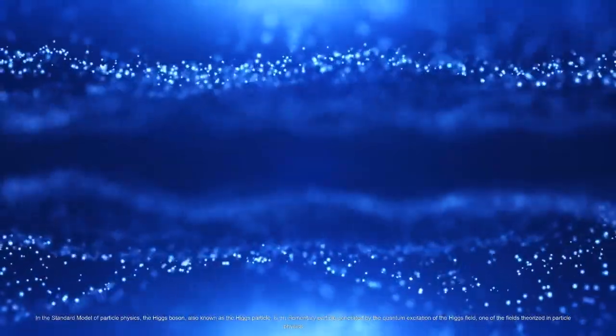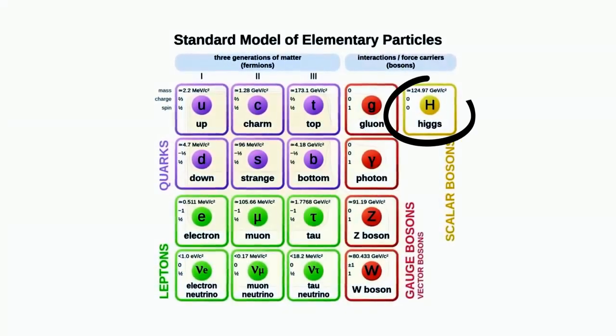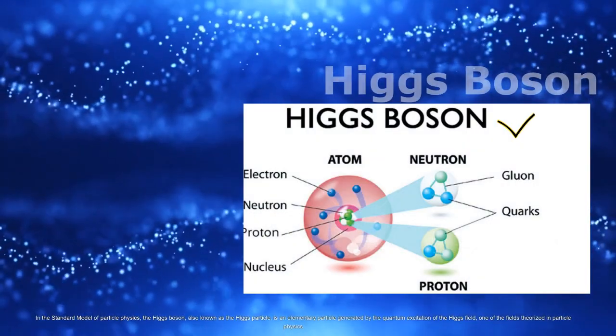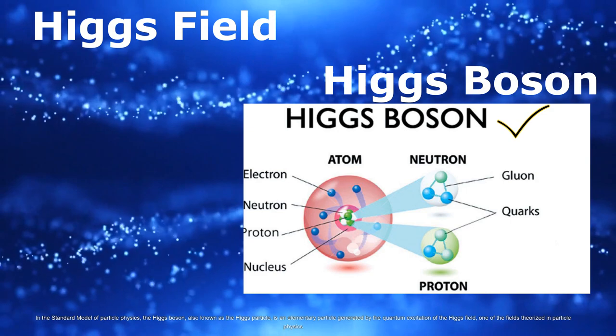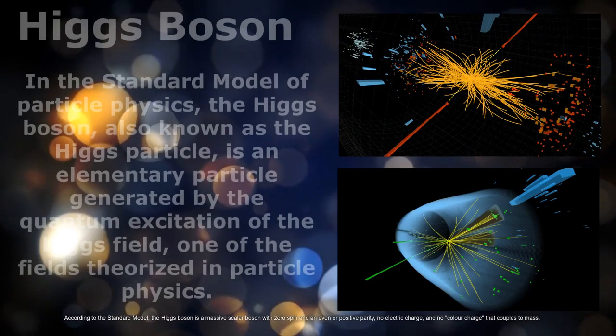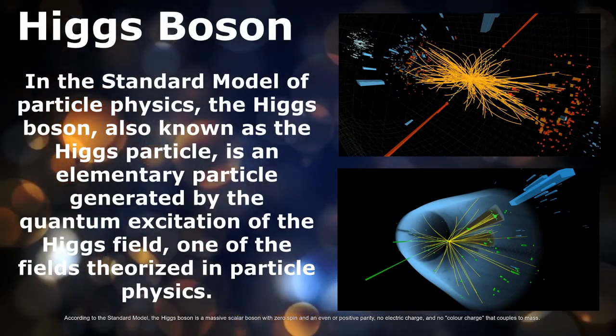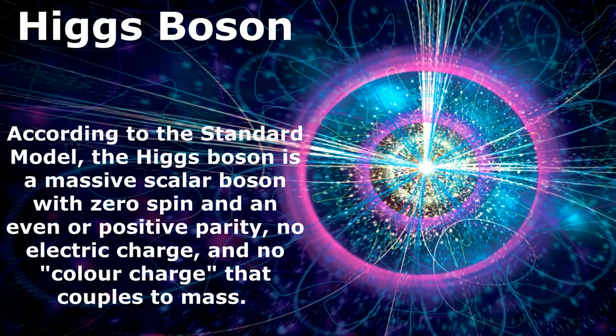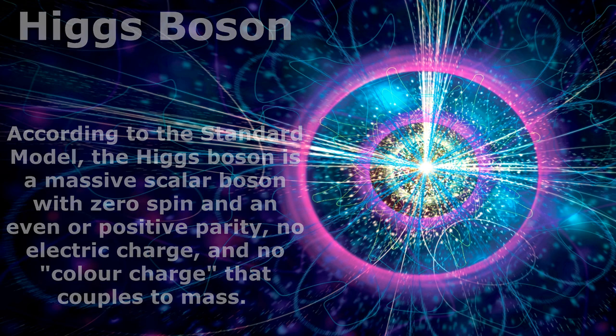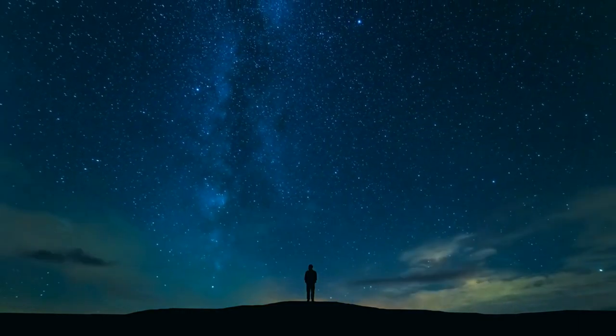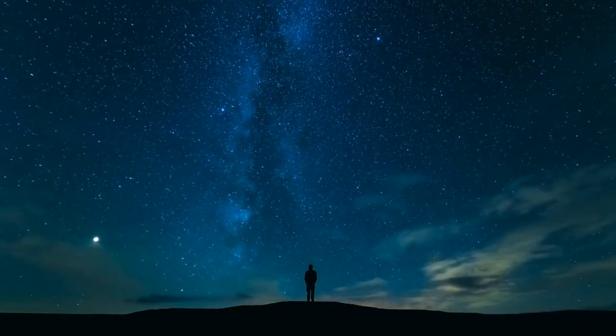In the standard model of particle physics, the Higgs boson, also known as the Higgs particle, is an elementary particle generated by the quantum excitation of the Higgs field. According to the standard model, the Higgs boson is a massive scalar boson with zero spin and even parity, no electric charge, and no color charge that couples to mass. Welcome back to my channel: mass giving mechanism in the Higgs boson.